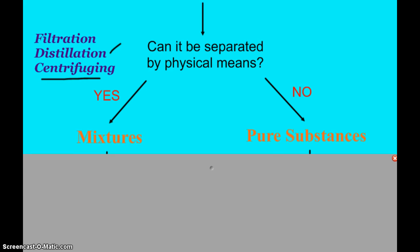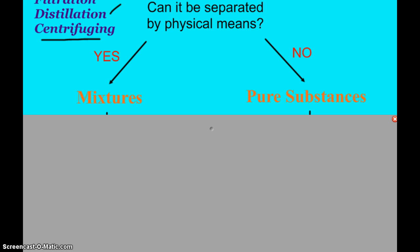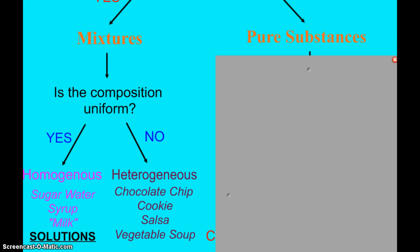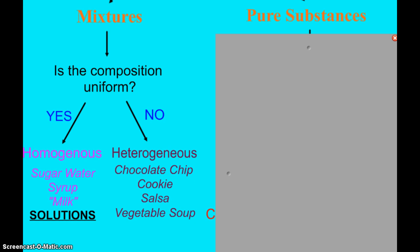Alright. So, yes. If you can physically separate it, then you have a mixture. And again, we talked about our two different types of mixtures, heterogeneous and homogeneous. So, is the mixture uniform in composition? If it is, then you've got a homogeneous mixture. If it's not, heterogeneous.